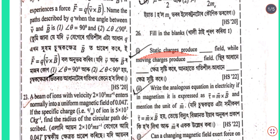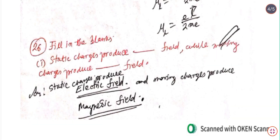Question number 26, fill in the blanks: Static charges produce ___ field while moving charges produce ___ field. The answer is: static charges produce electric field, while moving charges produce magnetic field.